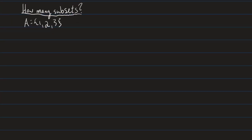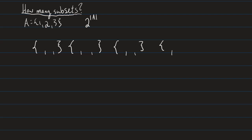I already have the set A = {1, 2, 3} written for us. How many subsets does A have? A actually has 2 to the power of the size of A subsets. You might wonder why — our cardinality of A tells us how many elements are in A, and for each of those elements, we can think of subsets in terms of whether or not we choose to include that element.